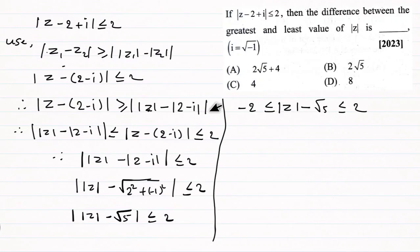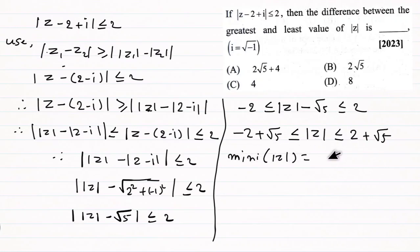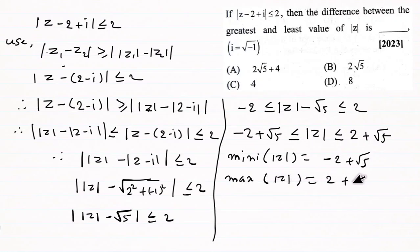Adding root 5 to all sides: root 5 minus 2 is less than or equal to modulus of z, which is less than or equal to 2 plus root 5. So the minimum value of modulus of z is (root 5 minus 2) and the maximum value of modulus of z is (root 5 plus 2).